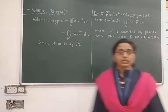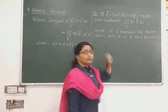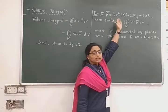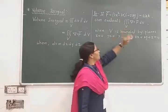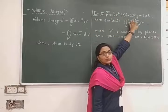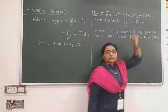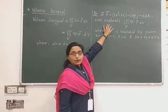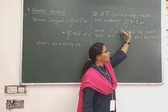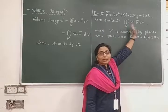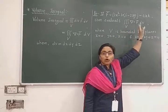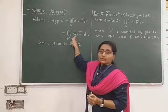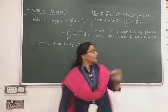Now let us see the example. The first example is: if F bar equals to (2x² - 3z)i - (2xy)j - (4x)k, then evaluate triple integration over V of del dot F bar dV. Del dot means divergence, which is nothing but del dot F bar.